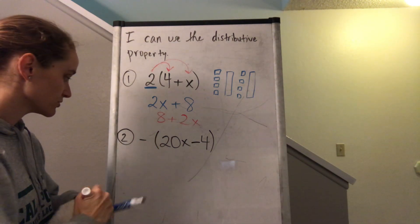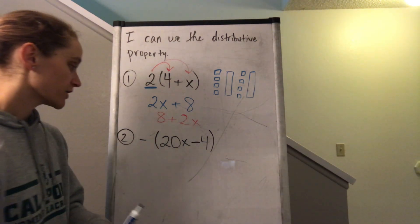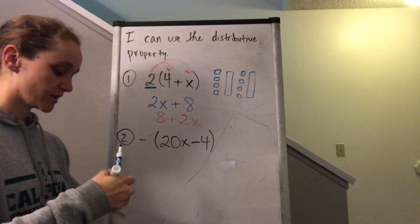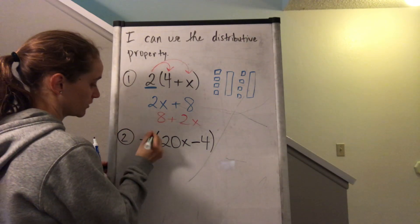Okay, same way to deal with number two, but on this one it's weird because it's a negative, but they don't have a number here. But remember, anytime there's a negative, there's an invisible one right here.